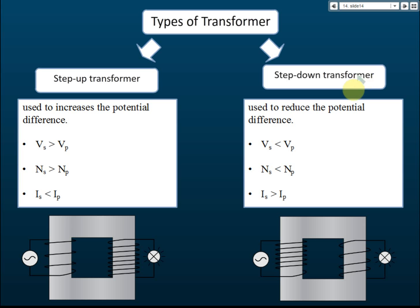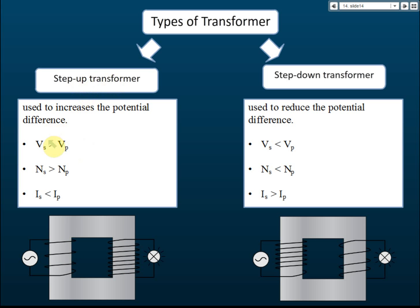We also have a step-down transformer, which is used to reduce the potential difference. For a step-up transformer, the number of turns in the secondary coil must be more than the number of turns in the primary coil. The ratio determines the voltage: in a step-up transformer, the secondary voltage must be higher than the primary voltage, and the secondary coil has more turns than the primary.